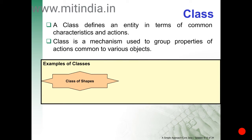Now the class definition: A class defines an entity in terms of common characteristics and actions. A class is a mechanism used to group properties and actions common to various objects.